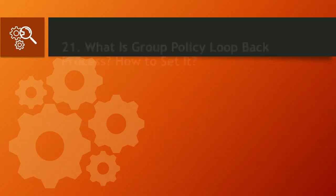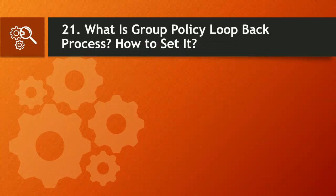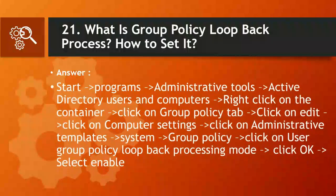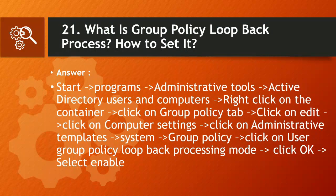Question 21: What is group policy loopback processing and how do you set it? Answer: Start > Programs > Administrative Tools > Active Directory Users and Computers > right-click on the container > click on Group Policy tab > click Edit > click on Computer Settings > Administrative Templates > System > Group Policy > click on User Group Policy Loopback Processing Mode > click OK > select Enable.